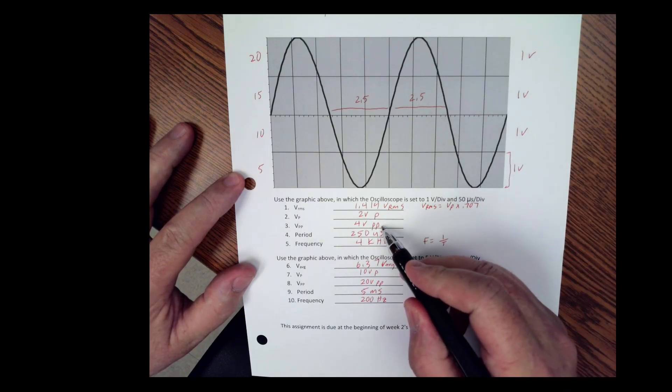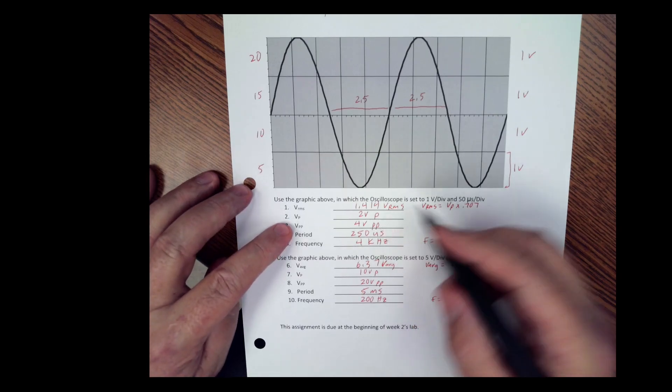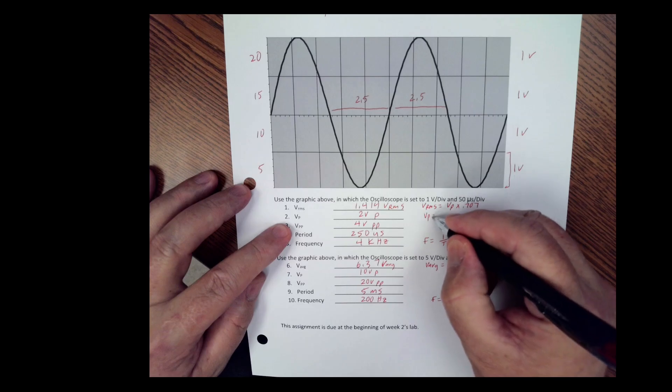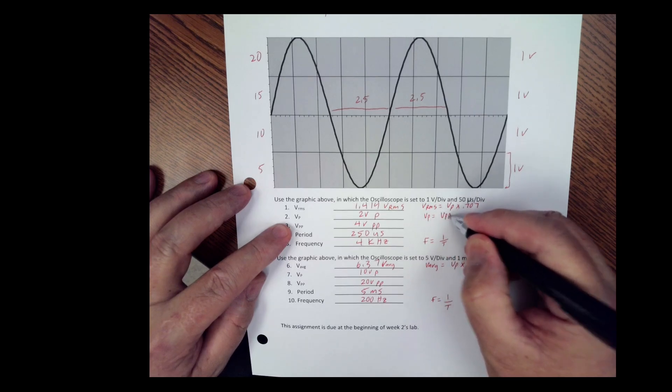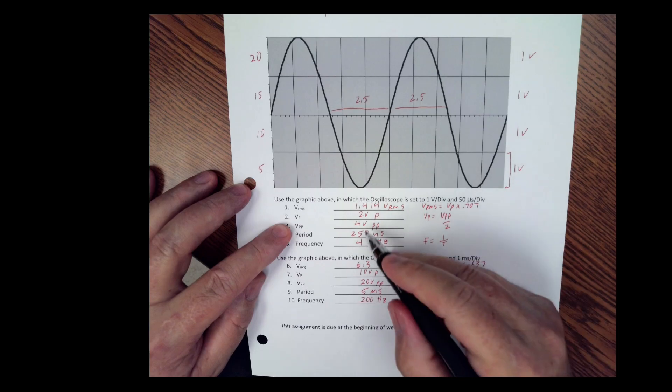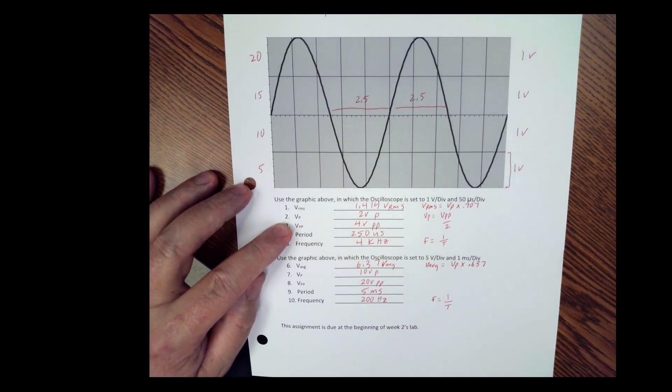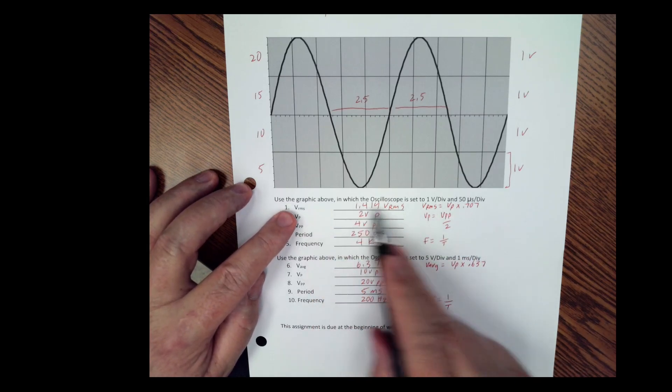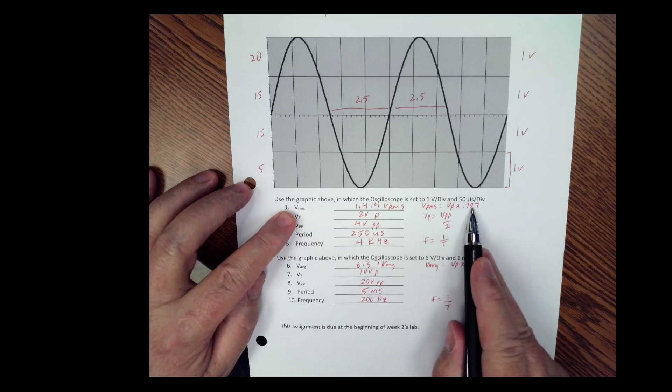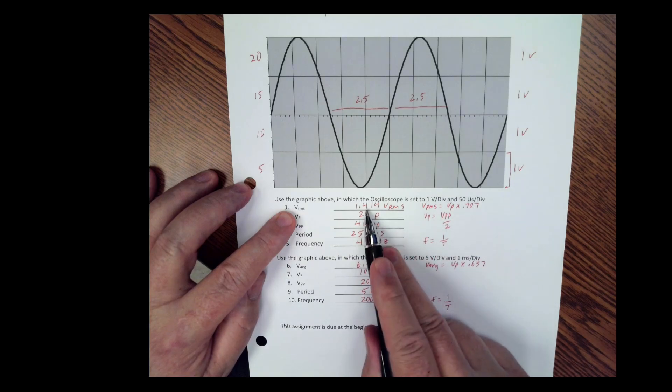The VP equals the VPP divided by two, so four divided by two is two volts peak. And then the voltage RMS is voltage peak times 0.707, which comes out to 1.414 volts RMS.